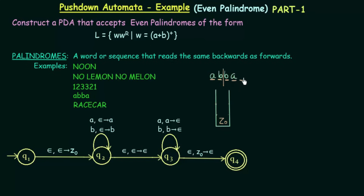We have now reached the end of the string. The only remaining element in the stack is Z0, which is indeed the topmost element. We pop Z0, the stack is now empty, and we have reached the final state Q4. Since we reached the final state with an empty stack, the string ABBA is accepted as an even palindrome.